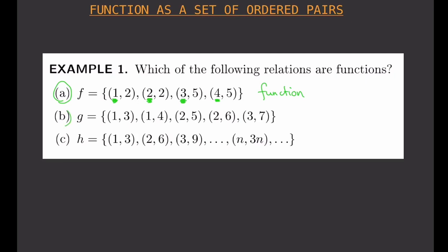Now let's look at the second example: {(1,3), (1,4), (2,5), (2,6), (3,7)}. Look at the first values — you have one, and then you have one again. Right there you already know it's not a function because the number one repeated. Remember, you only need to consider the first numbers. So from just those two pairs, you already know this is not a function.